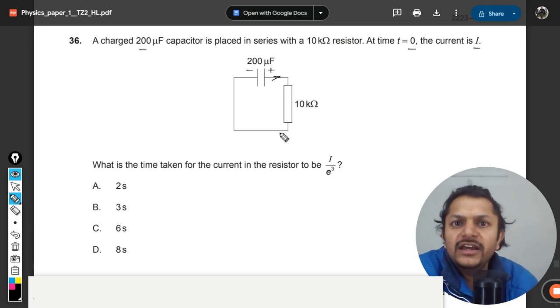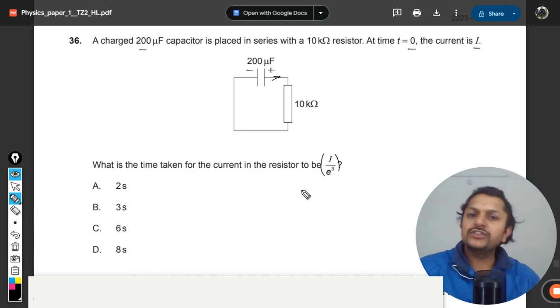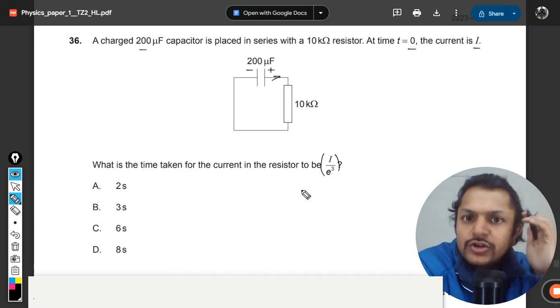What is the time taken for the current in the resistor to become this much? So first of all, this question is about the discharging of a capacitor.